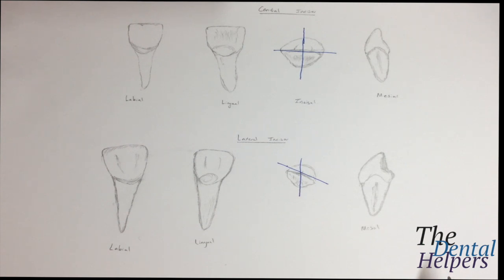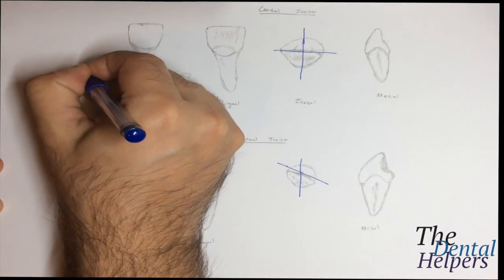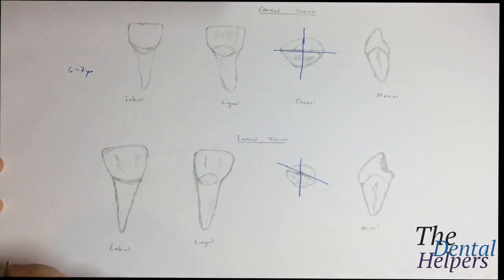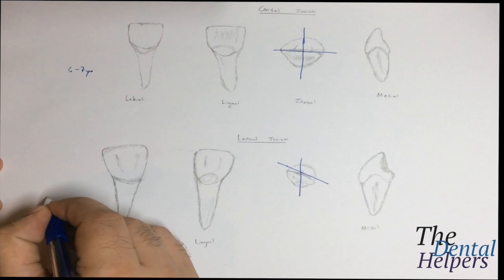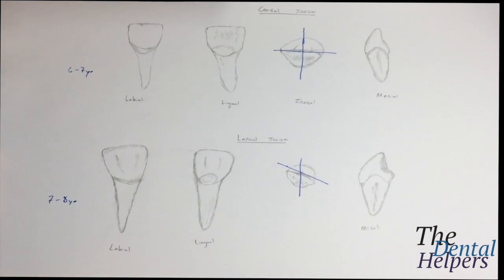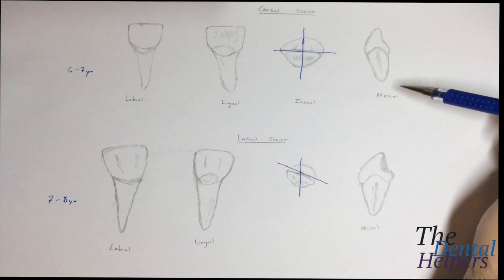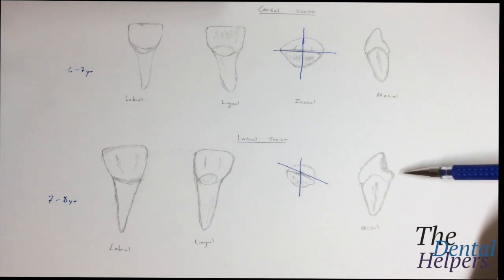So let's start with the mandibular central incisor. These guys are going to come out at 6 to 7 years old. While the lateral, mandibular lateral incisors, they're going to come out a little later at 7 to 8. Now if you remember the maxillaries, they were 7 to 8 and then 8 to 9. So as you see, we're first going to have the centrals coming out first, and then a year later typically the laterals will come out.